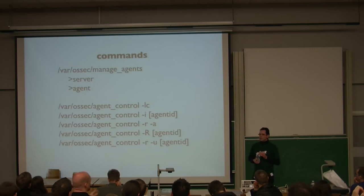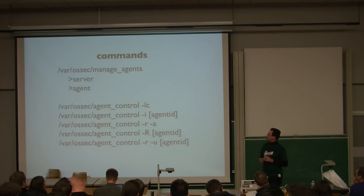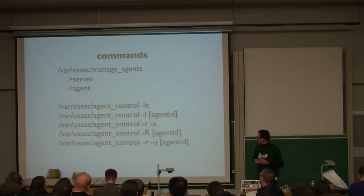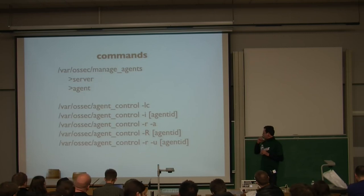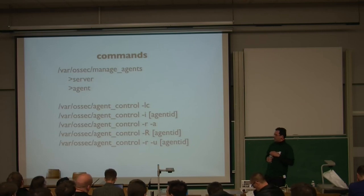Agent control, that's your main tool to control all the behavior of the agents. Minus LC is going to give you the list of the clients that are currently connected. Then minus agent ID is going to give you the information on the client, which is the OS version, IP address, and if you're going to use central configuration, which I will explain a little later, you will also see the MD5 hash of the central configuration file, so you can compare it and see that it's up to date. Minus small r, a is going to do the system check and the ID integrity check and the rootkit detection check on all the agents. Minus r, and then provided with the agent ID is going to restart an agent, and minus r, minus u, with the agent ID is going to do the system check on a specific agent.